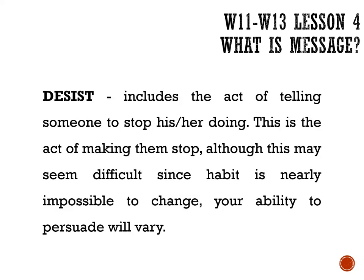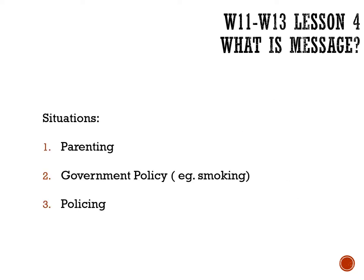The next one is desist. This includes the act of telling someone to stop what they are doing — the act of making them stop. Although this may seem difficult since habits are nearly impossible to change, your ability to persuade will vary. Examples include situations such as parenting or government policy, such as smoking bans. For example, if you know someone who has been smoking for several years, it is hard to stop them because they are used to it, making the act of persuading them to quit challenging.